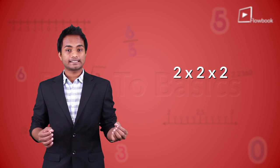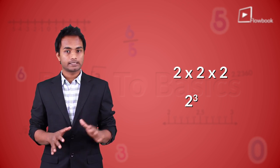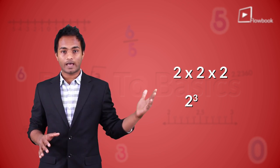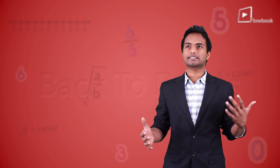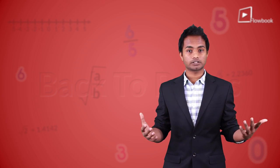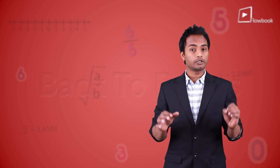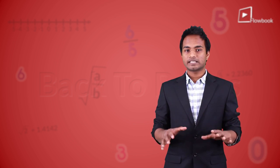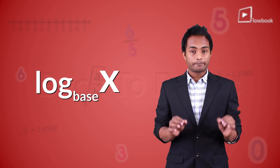Now this is 2 cubed — from exponents we know that this value is 8. Logarithms is basically like the inverse of exponents. Let me tell you how: in logarithms there's a base for everything.